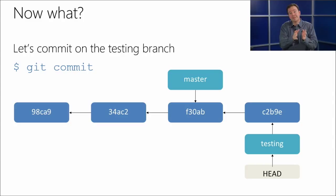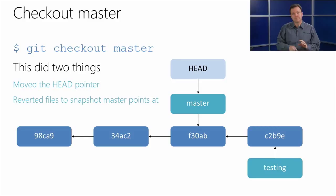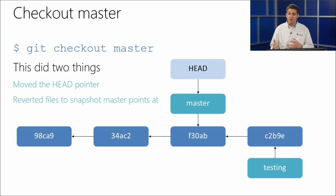We started the Git Fundamentals module looking at the difference between a traditional VCS that does file versioning versus Git's snapshot model. Now that we have snapshots as distinct mechanisms, we get the ability to just use branches — they're just pointers. When you do `git checkout master`, all it does is move HEAD to master and reverts the files to that snapshot, pulling it into your working folder.